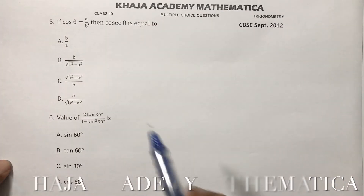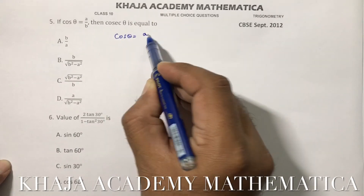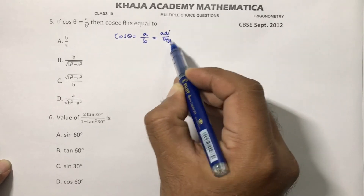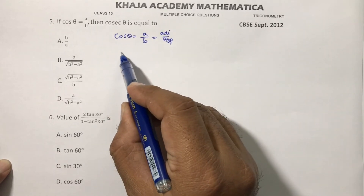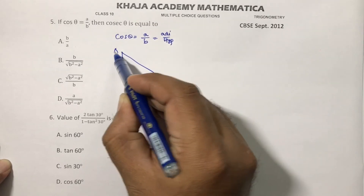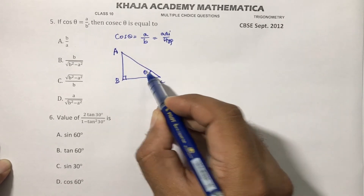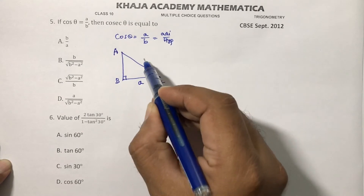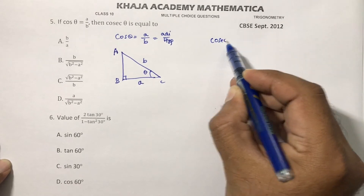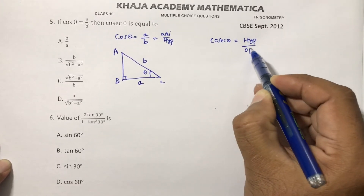If cos theta equals A by B, then find cosec theta. Cos theta is adjacent by hypotenuse, so take a right angle triangle with right angle at B. Adjacent is A and hypotenuse is B. We need cosec theta, which is hypotenuse by opposite.